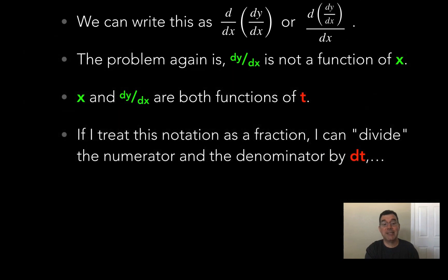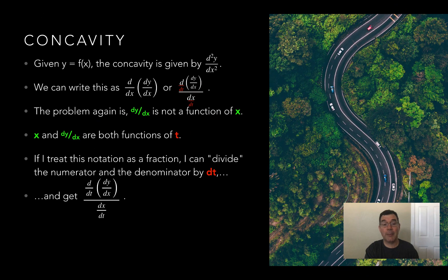So what I do is, again, I treat this third version that I've written for the second derivative, and I divide top and bottom by dt. And so I get this expression here. So I'm going to take the derivative of dy dx with respect to t and put that on top, and I will take dx dt and put that on the bottom.